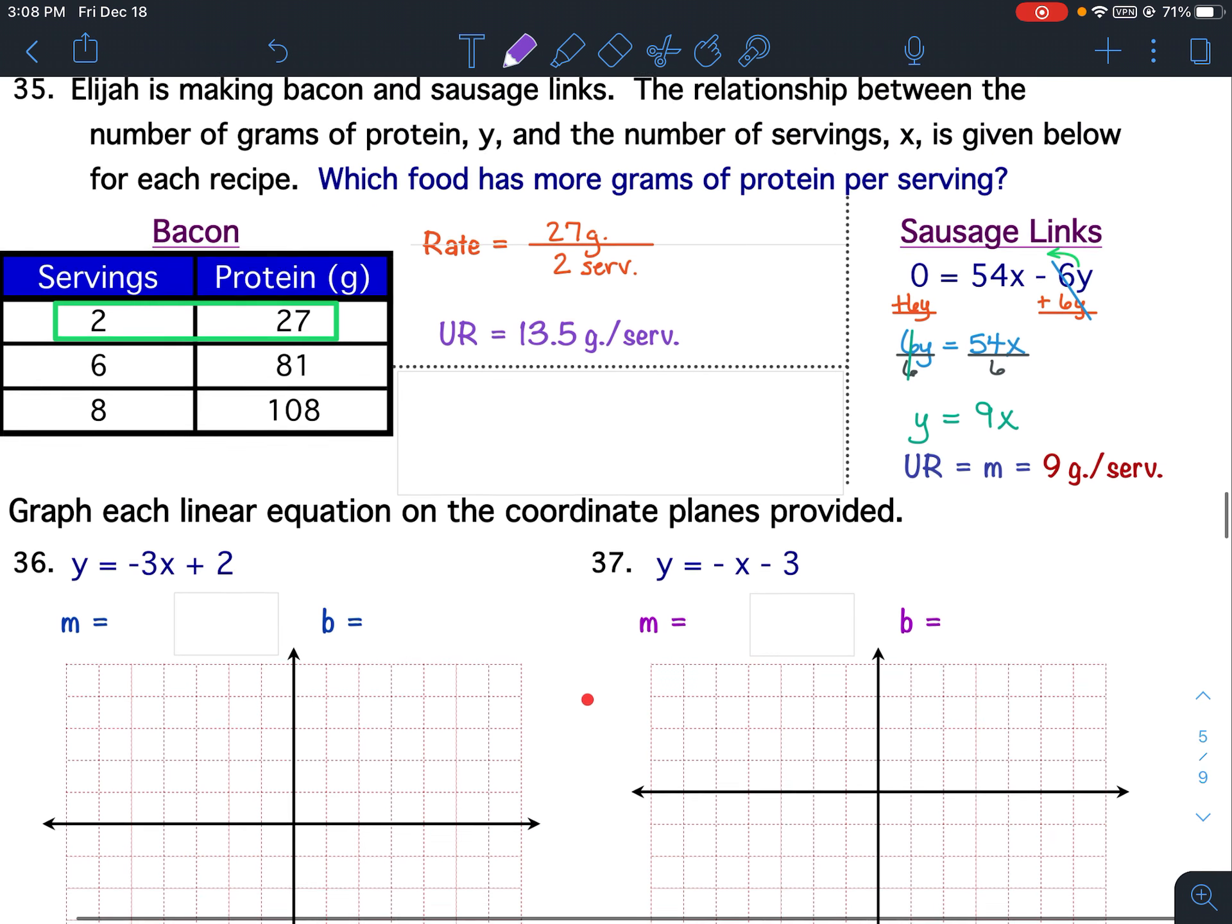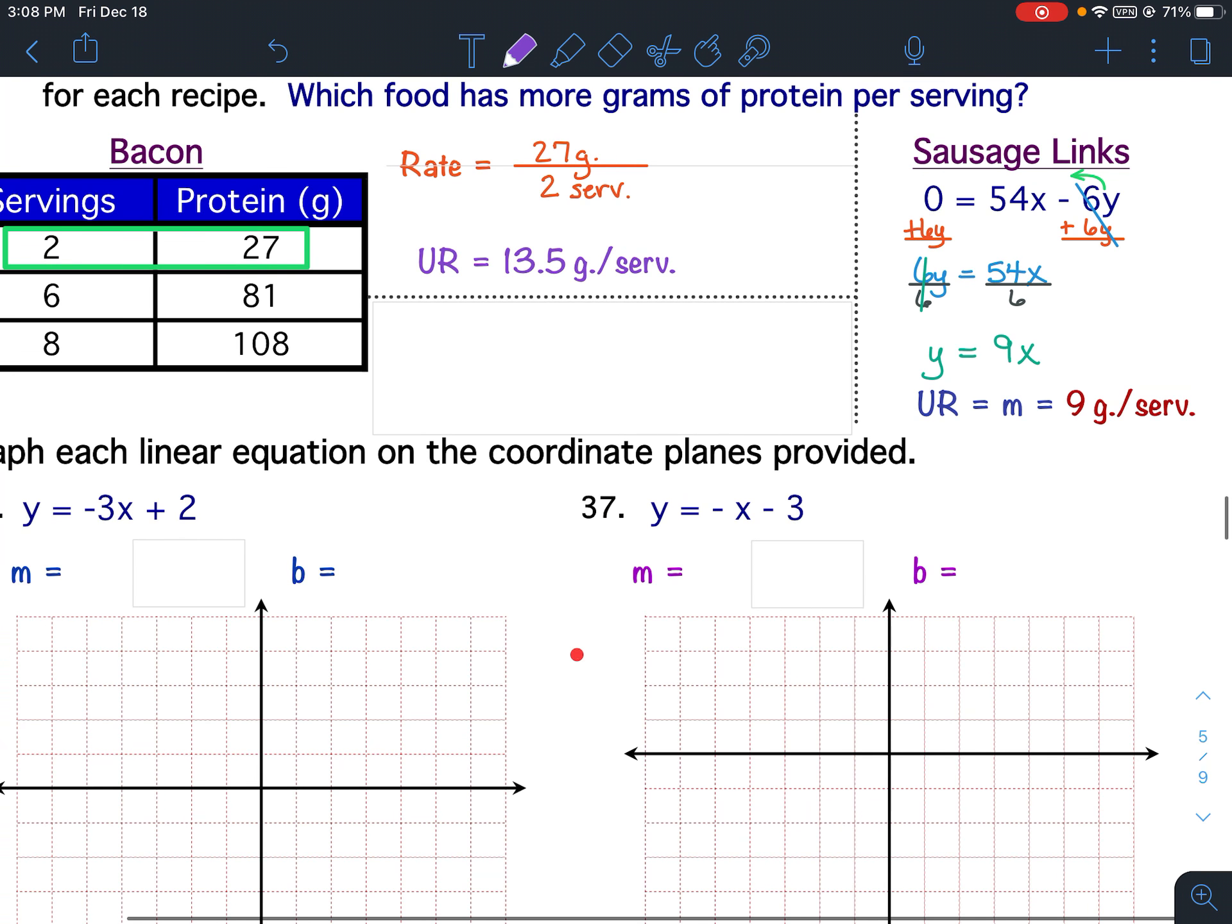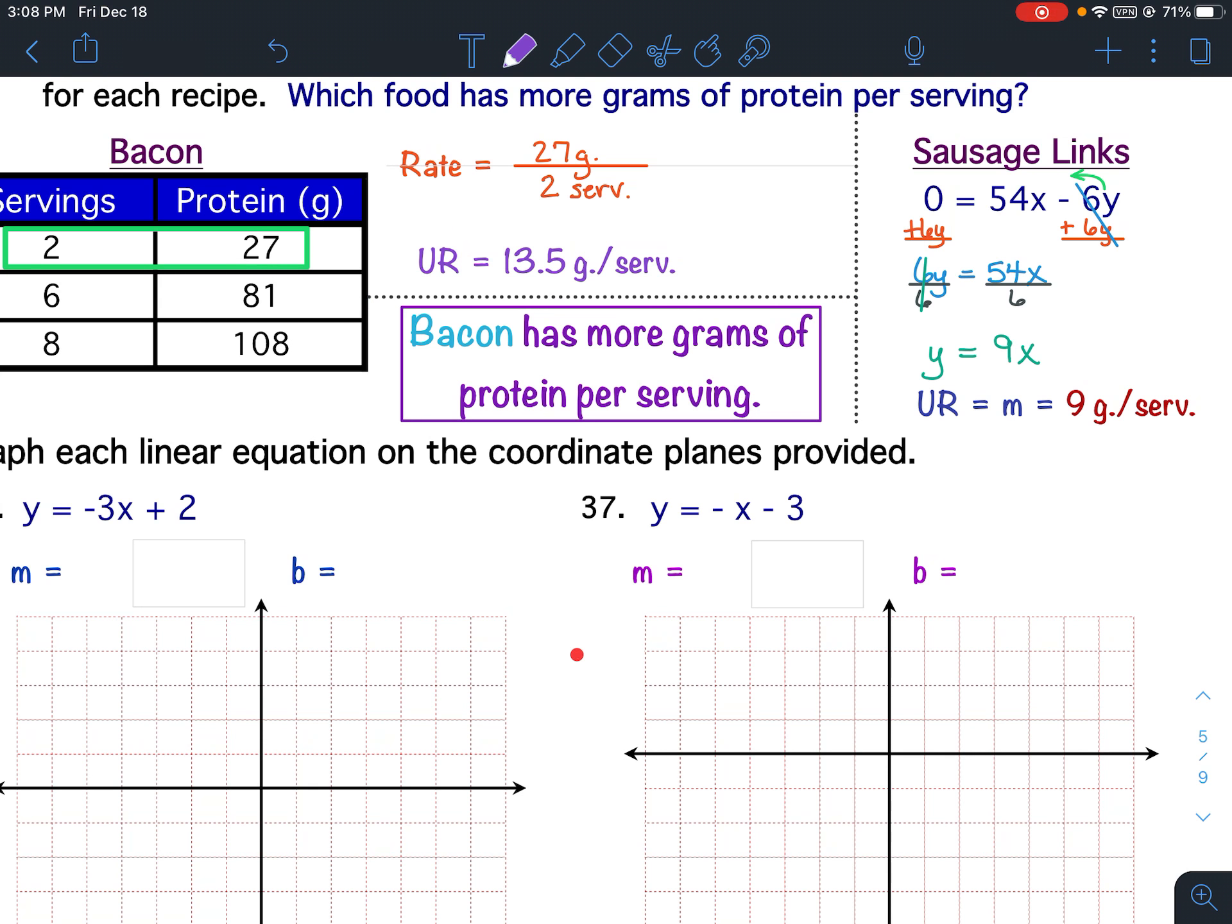Now let's compare the two numbers. Bacon is 13.5 grams per serving and sausage is 9 grams per serving. So bacon has more grams of protein per serving.